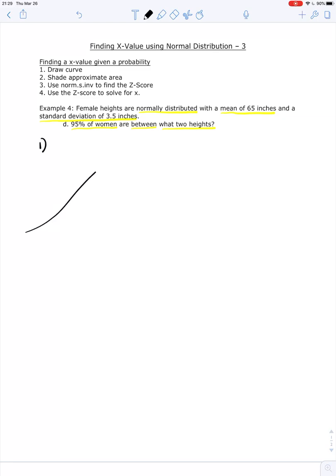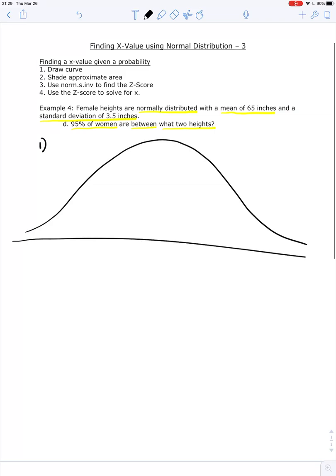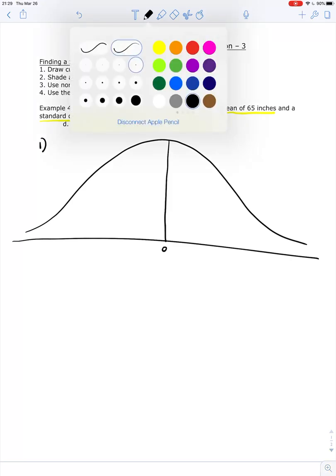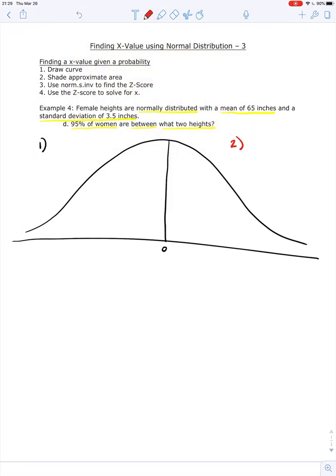So we're going to follow the same steps we were before. So we're going to start by drawing our curve. I'm drawing it nice and big. I'm going to label that middle, and then we're going to shade. We have between, which means the middle, and we want the middle 95%. So I'm going to shade 95% of my curve, and I'm going to start in the middle.